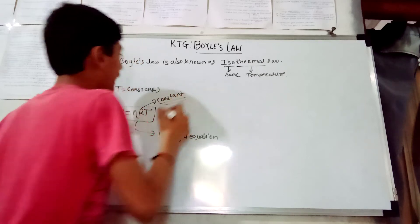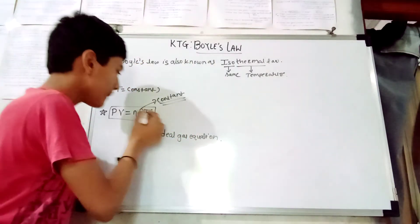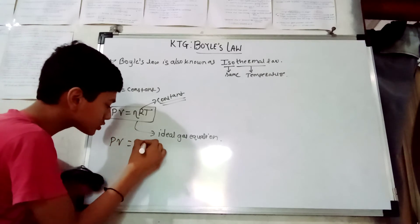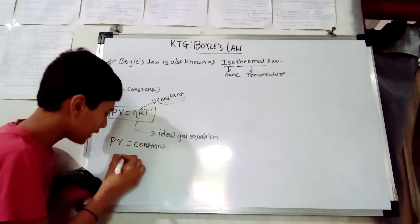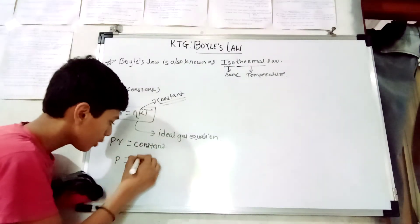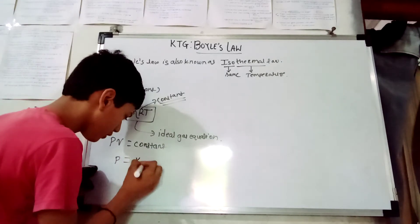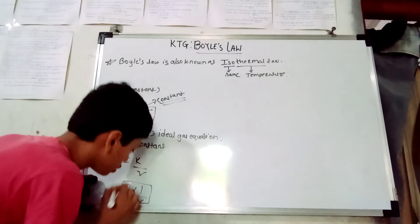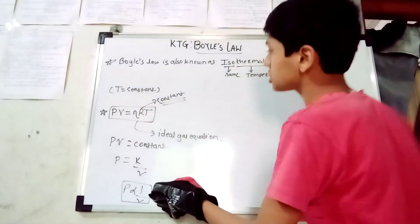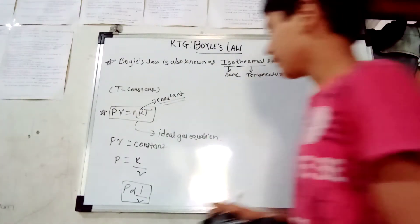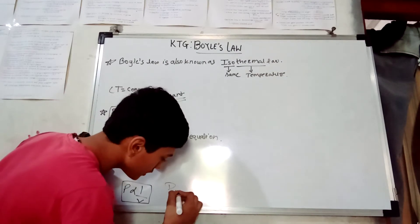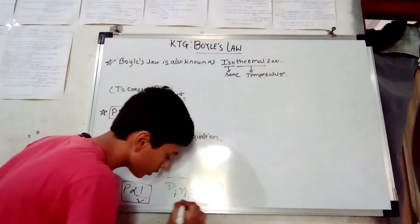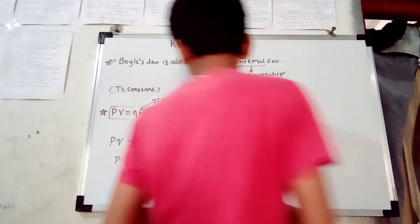Since R is a constant and temperature is also constant, we can say that pressure into volume equals a constant — so pressure is inversely proportional to volume. Also importantly, P initial × V initial is equal to P final × V final.